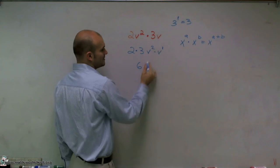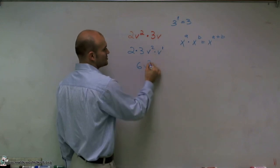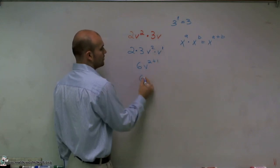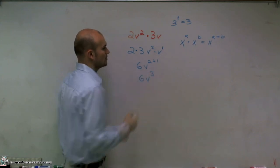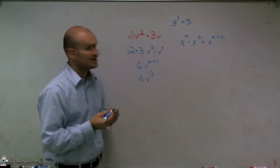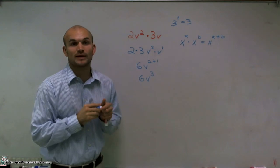And then v is going to provide me v times 2 plus 1. Well, that gives me 6 times v raised to the third power. And that is how you simplify this expression with multiplication. Thanks.